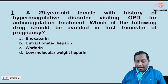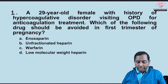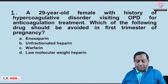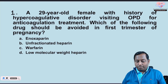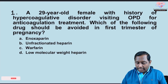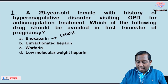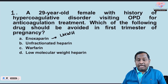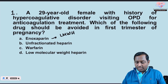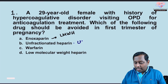The very first question is about a 29-year-old female with a history of hypercoagulative disorder visiting OPD for anticoagulation treatment. Which of the following drugs should be avoided in the first trimester of pregnancy? Oxaparin is one of the low molecular weight heparins — it can be utilized. Unfractionated heparin can also be utilized.